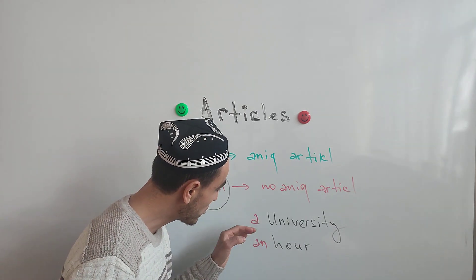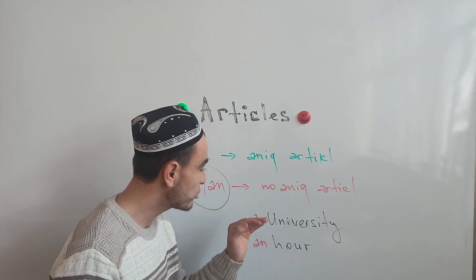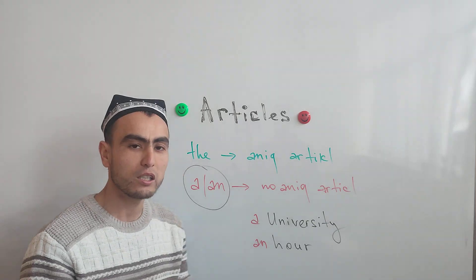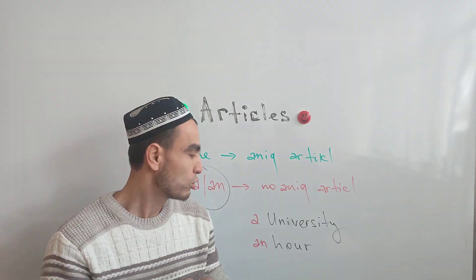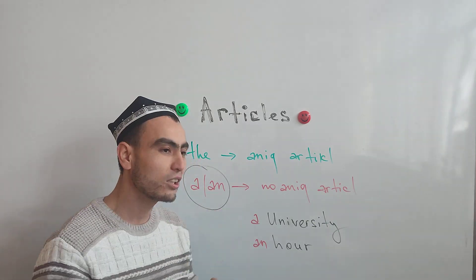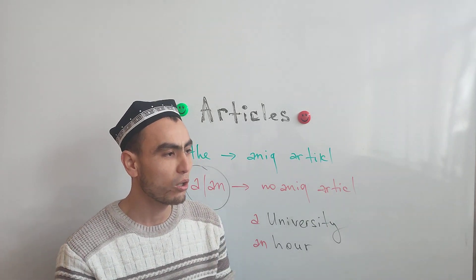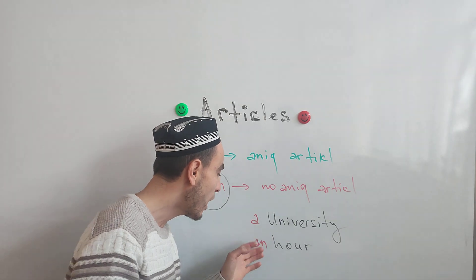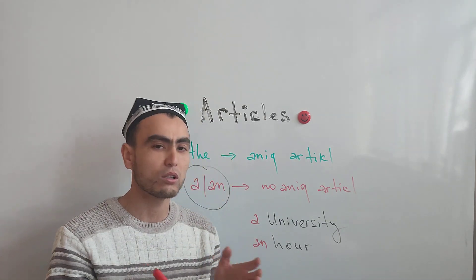For example: 'a university.' The article used here is 'a,' not 'an.' This is because 'university' begins with a consonant sound — the 'yu' sound — not a vowel sound.